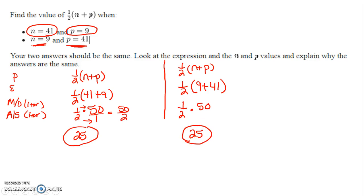Then they say these answers should be the same. Look at the expressions and the values for n and p and explain why the answers are the same. Well, if you can see this first expression, it was 41 plus 9. The second expression is exactly the same, except it's 9 plus 41.